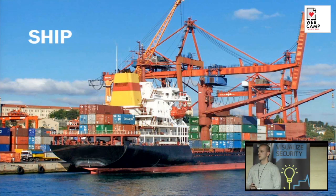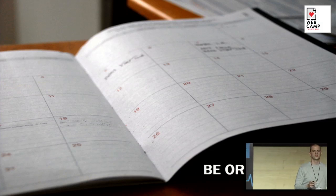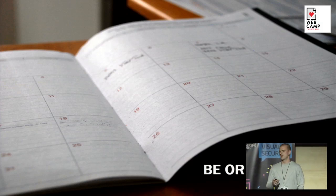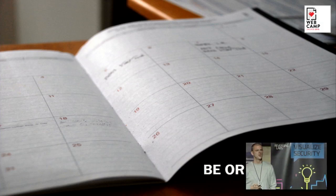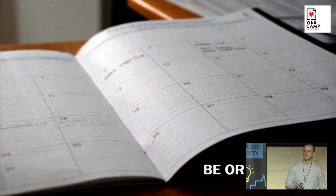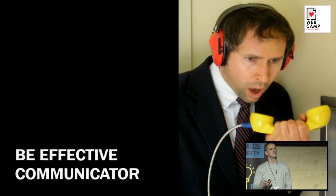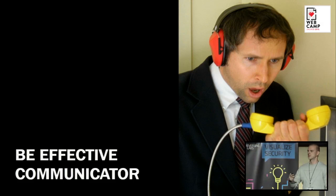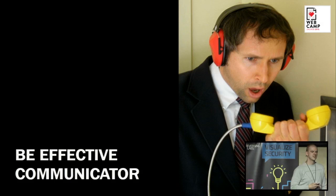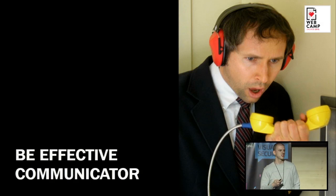Be an effective communicator. Whenever the issue is not urgent, try to communicate asynchronously — you don't want to stop people in their work or break their focus. When you need help, always provide context first: communicate what you're working on, what the problem is, and be specific about what kind of help you need. When you write emails, make them short, use simple sentences and bullets, and make them actionable — the recipient should know what action is required and from whom.